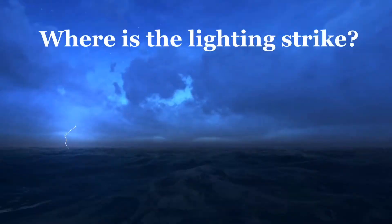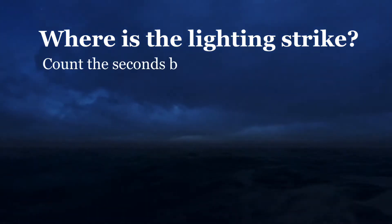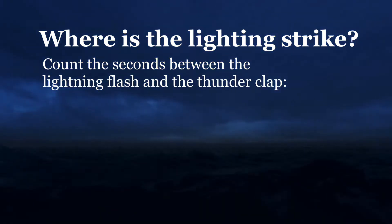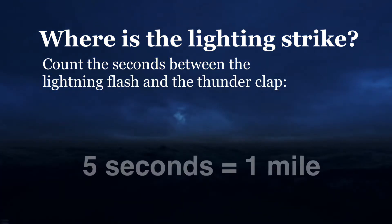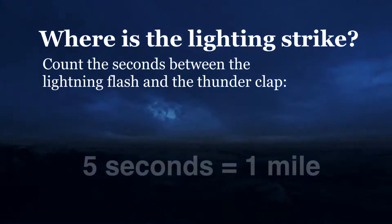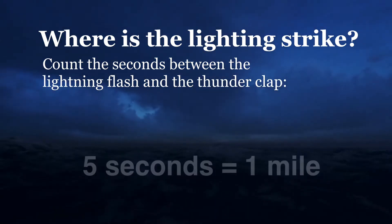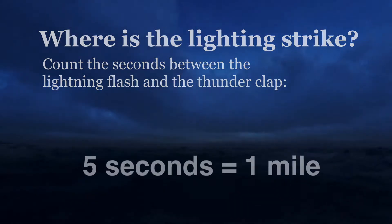Did you know? To calculate where a lightning strike is in relation to you, count the seconds between the lightning flash and the thunderclap. Every five seconds equals one mile. The closer the lightning strike is to the thunderclap, the closer the lightning bolt was to you.